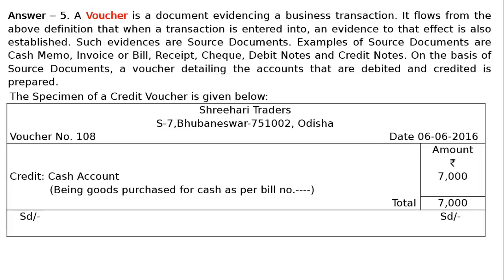We have to write down the manager's signature on the left side, and on the right side the account and signature will be there — a bottom left and a bottom right. This is the specimen of a credit voucher as shown.